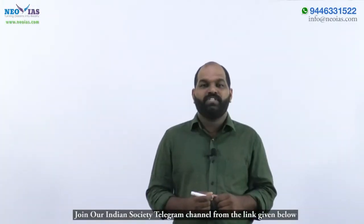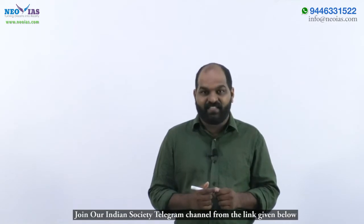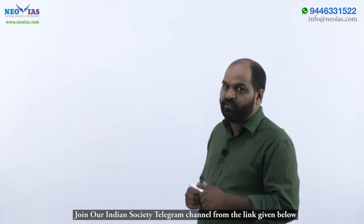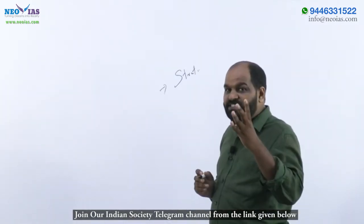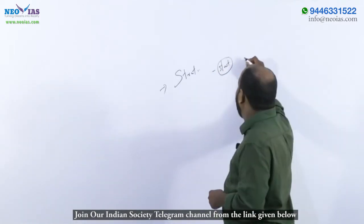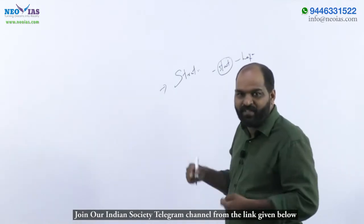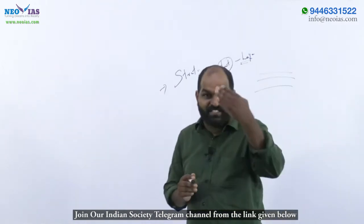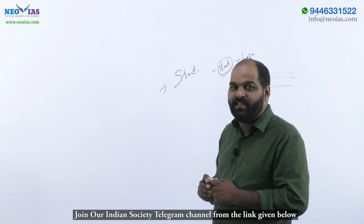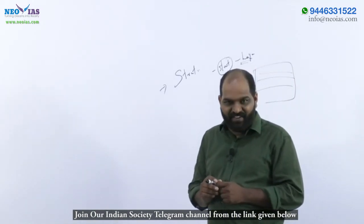Today we are going to take a new topic: social stratification. First, what is stratification and where does it come from? Stratification comes from the word 'strata,' which means layers — it comes from geography, not from sociology. We are adopting that concept here. Just as rocks in geography are arranged as layers, similarly society is arranged as layers of social groups. This is what we call social stratification.